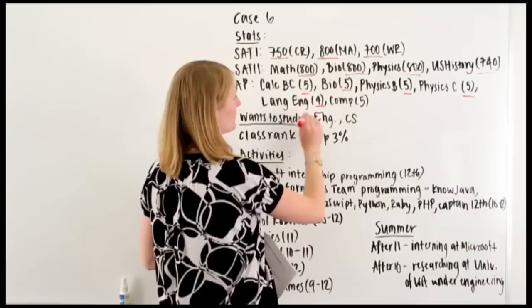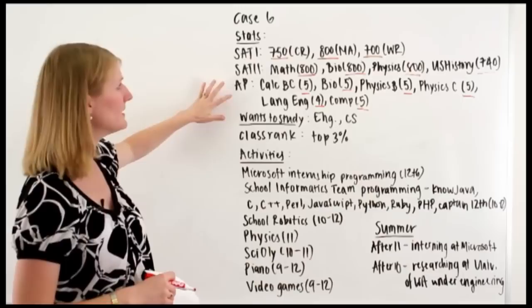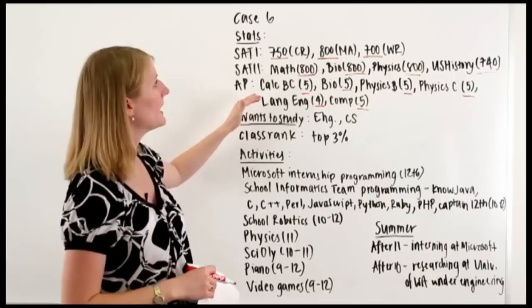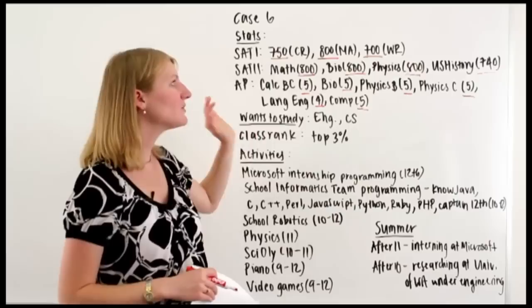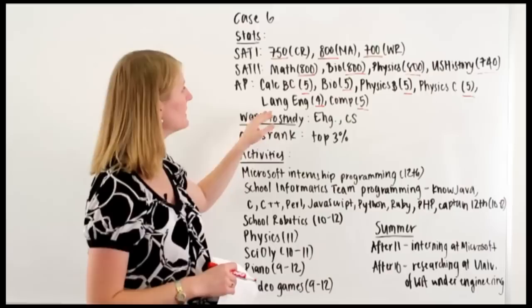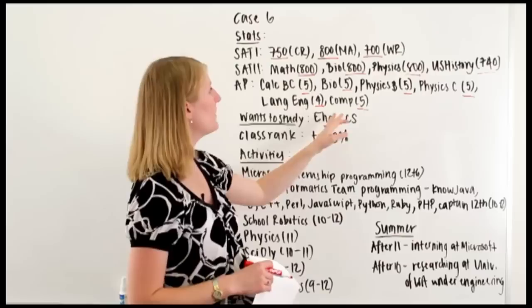So what I like about this is this student has taken a lot of APs, first of all, but also consistently throws in a humanities here and there. So he's not so angular that he's just focused on the sciences and the maths. Still does pursue English language, got a 4, but still that's strong. Composition 5, which is usually a little bit more difficult anyway.